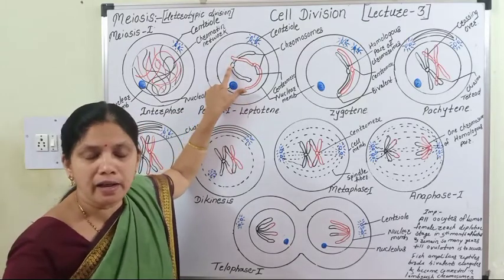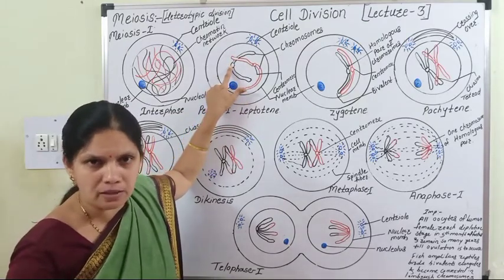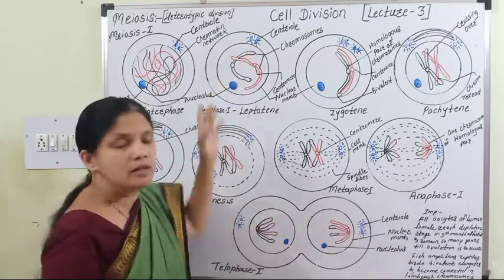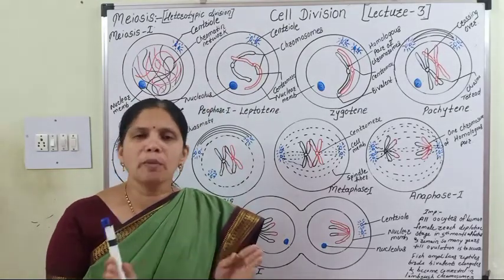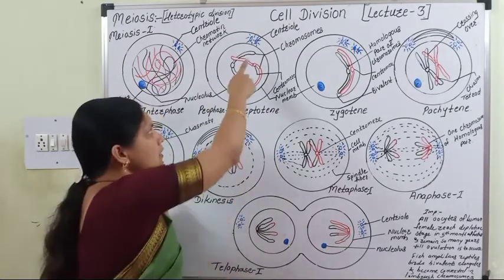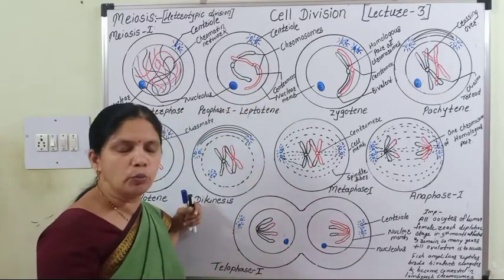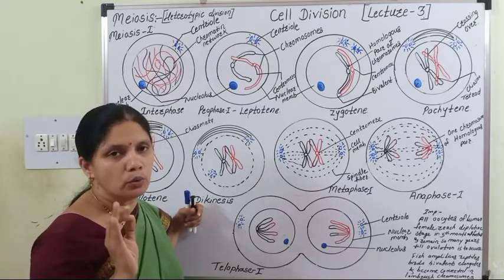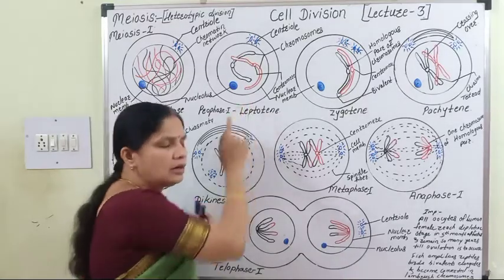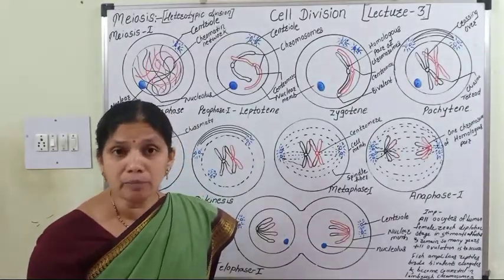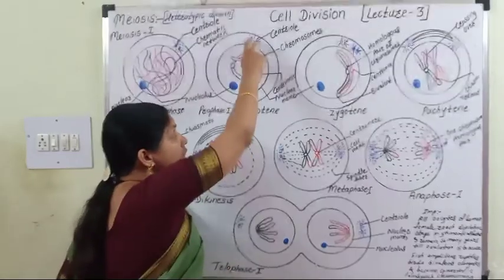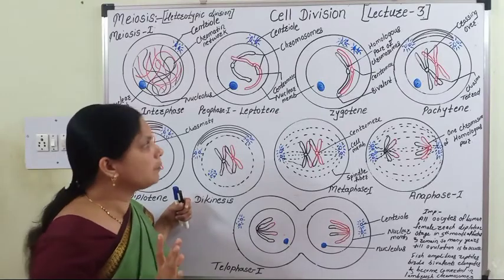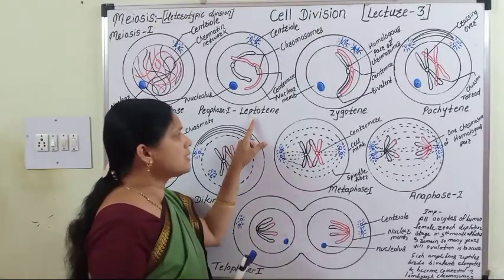In leptotene, each chromosome has two chromatids, but they are not clearly observed separately — only a single chromosome is visible. If meiosis takes place in an animal cell, two centrioles are also present.